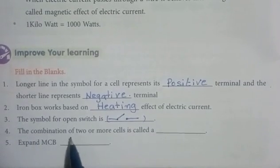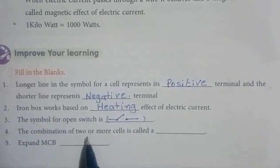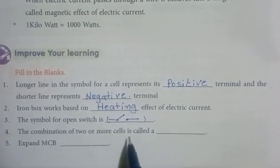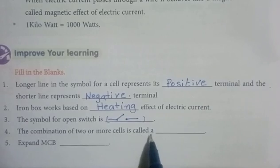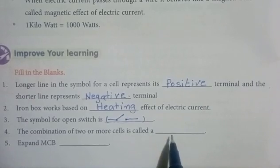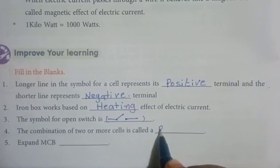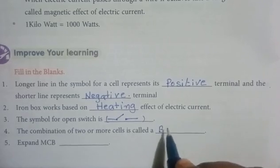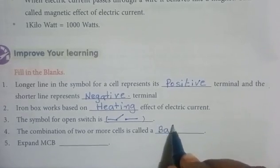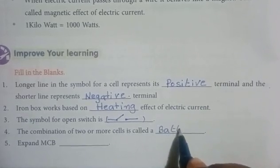The combination of two or more cells is called a battery.